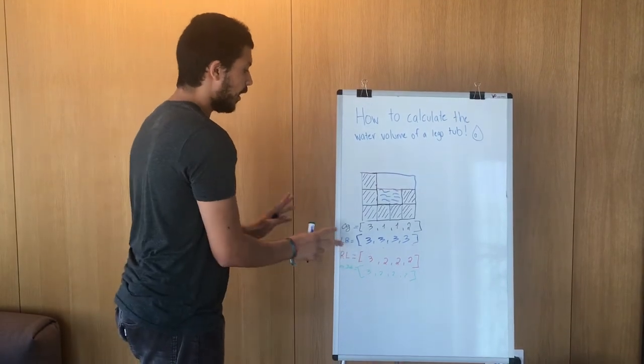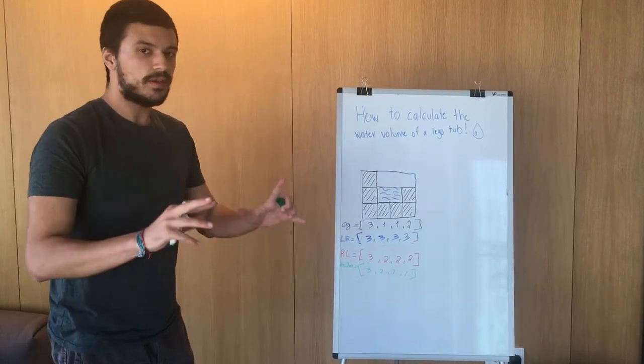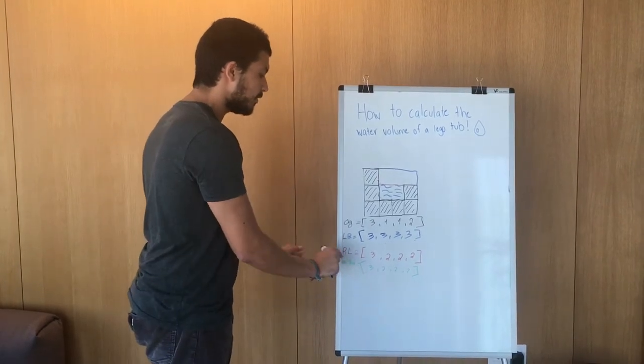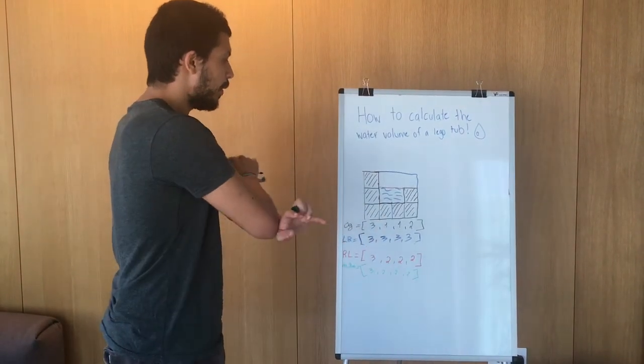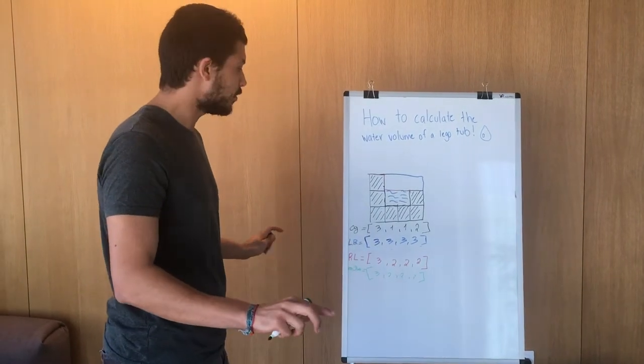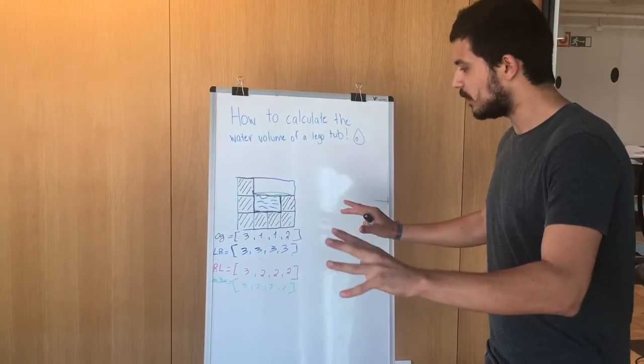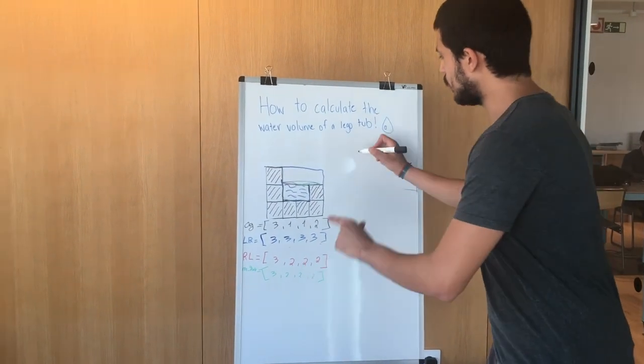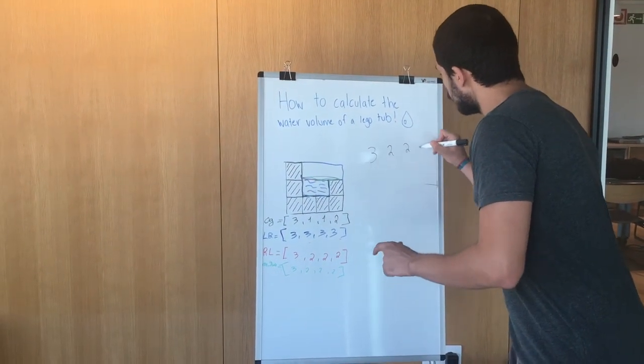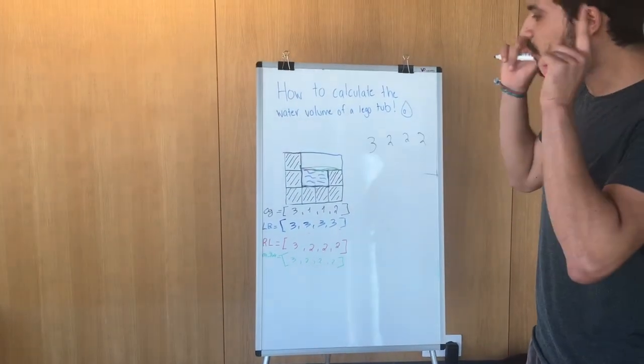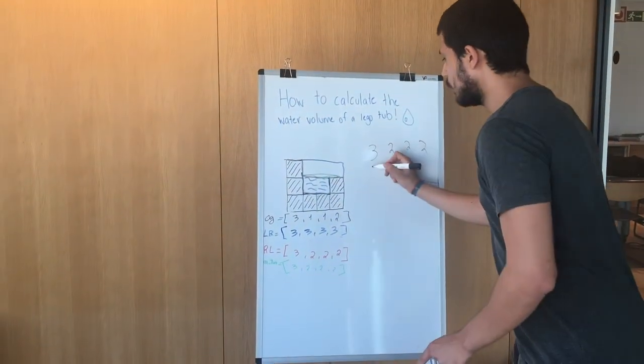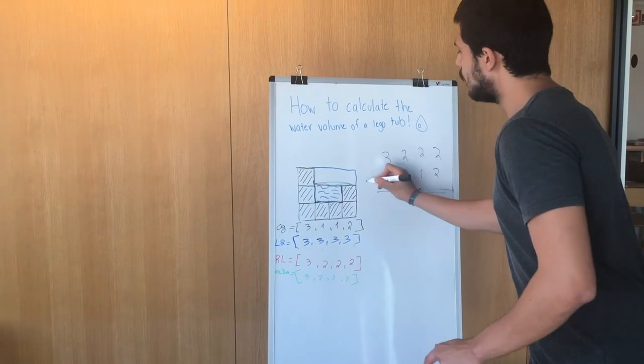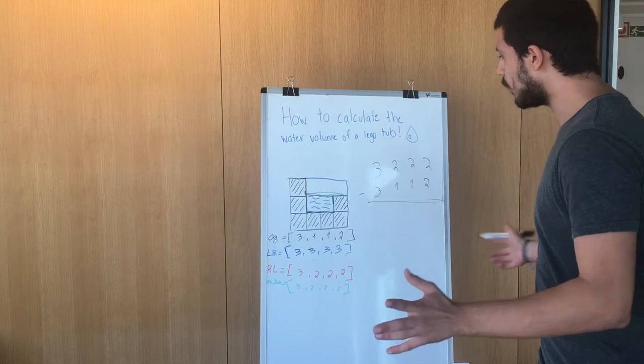Right now, you can realize that these two are the same. There are some specific configurations where this doesn't happen and this is why this is a very important step in our algorithm, because we want our algorithm to work with any specified configuration. So how are we going to implement this? Very simply, we're going to grab our min 2 list which is 3, 2, 2, 2 and we're going to subtract our original list which is 3, 1, 1, 2. And here, we're going to get water.